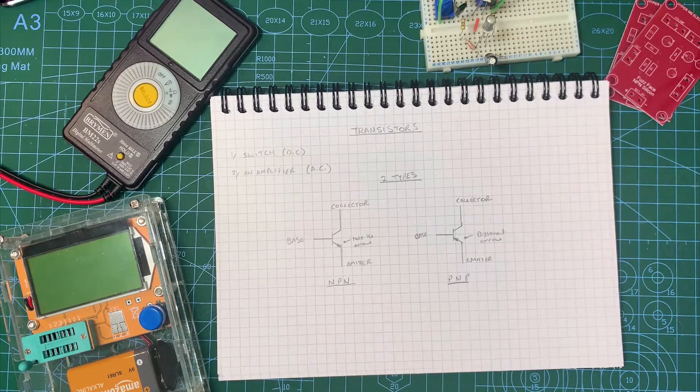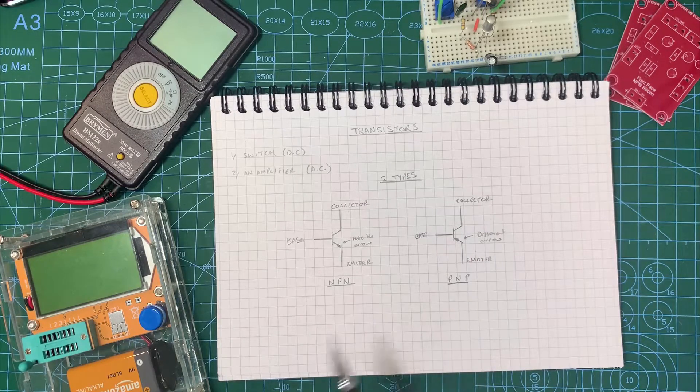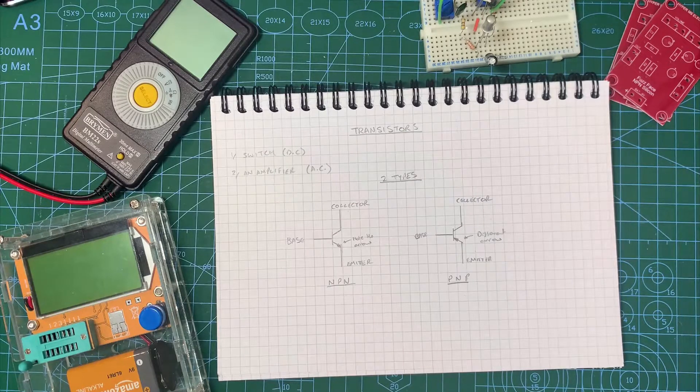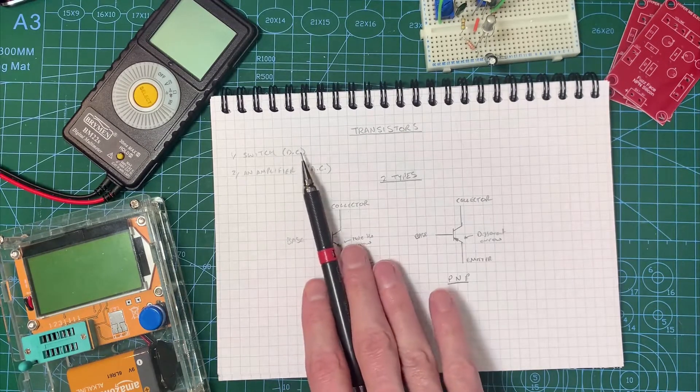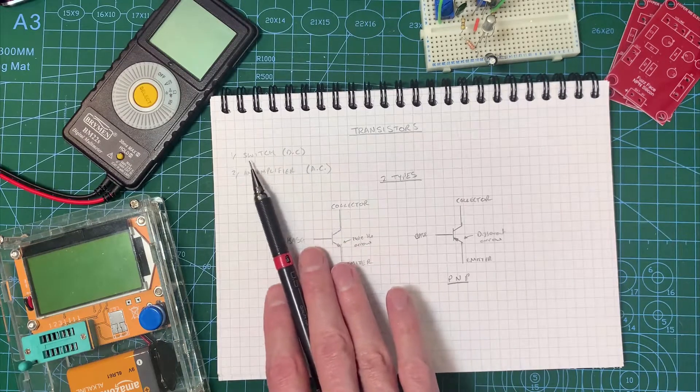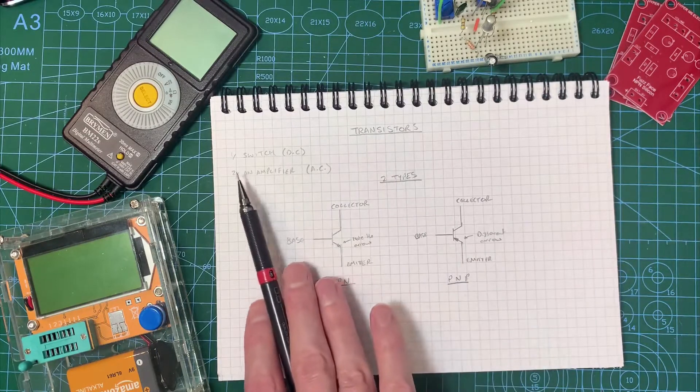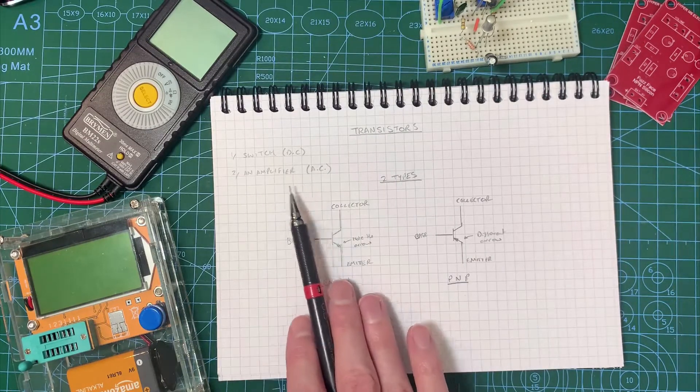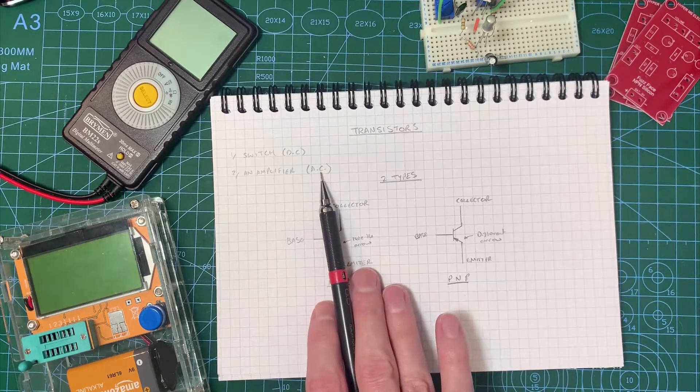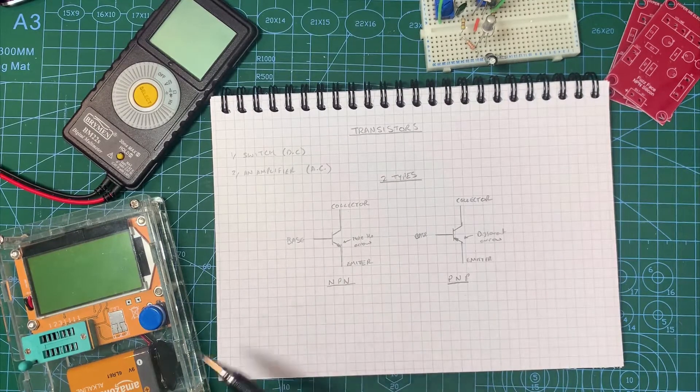So here I've drawn two common types of transistors: an NPN and a PNP. Transistors really have two things they can do in a circuit. They are either a switch, and this usually relates to direct current, so they're going to be on or off - hence why they're used in computers, digital zeros and ones. Or, as we are going to be using them, an amplifier, and that really applies for alternating current signals such as electronic audio signals from guitars and synths.